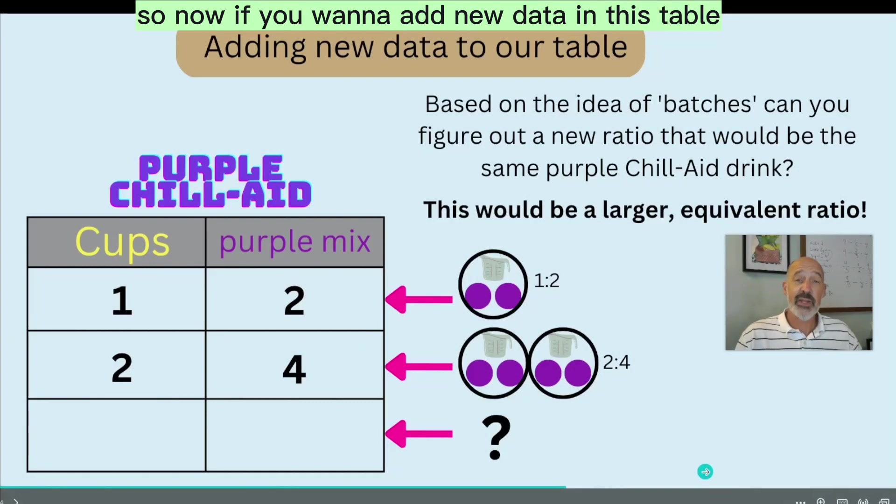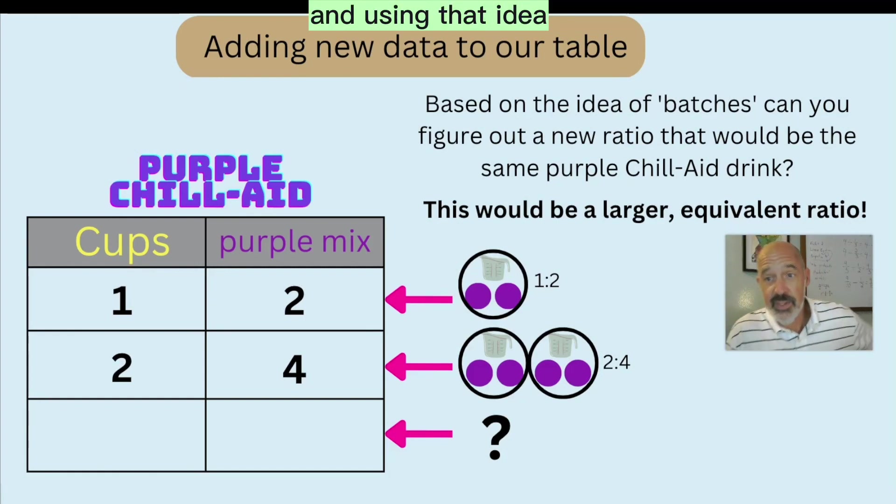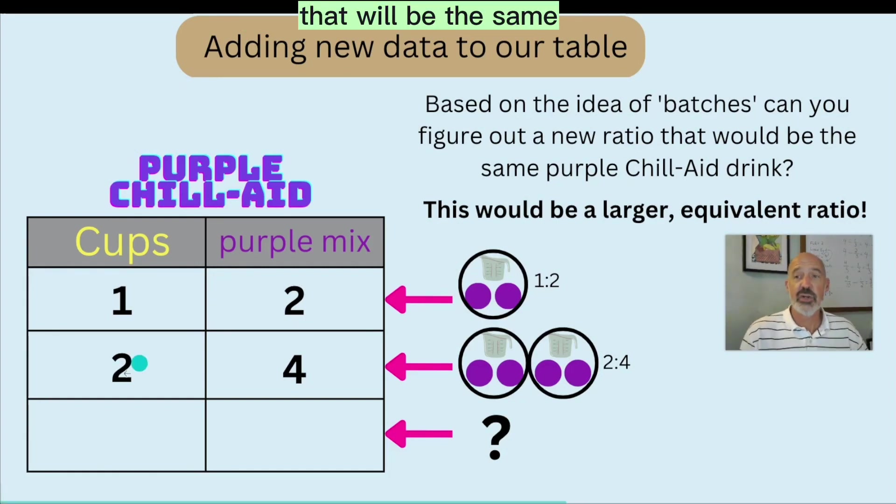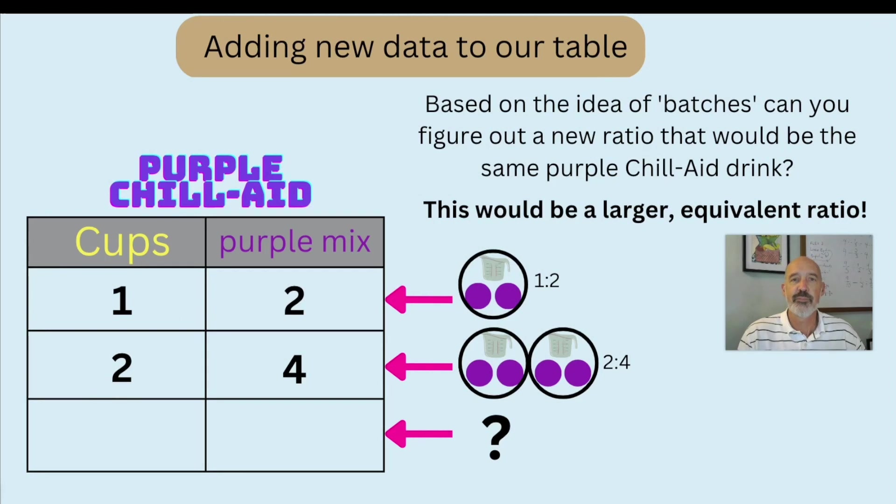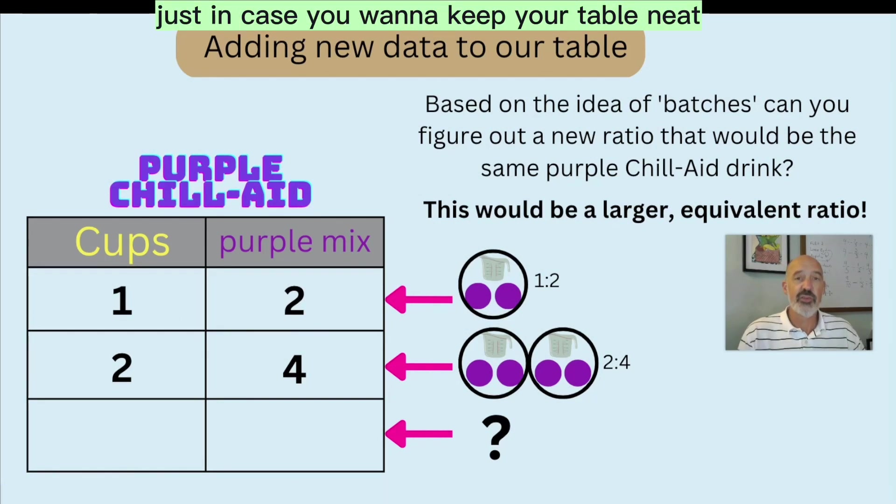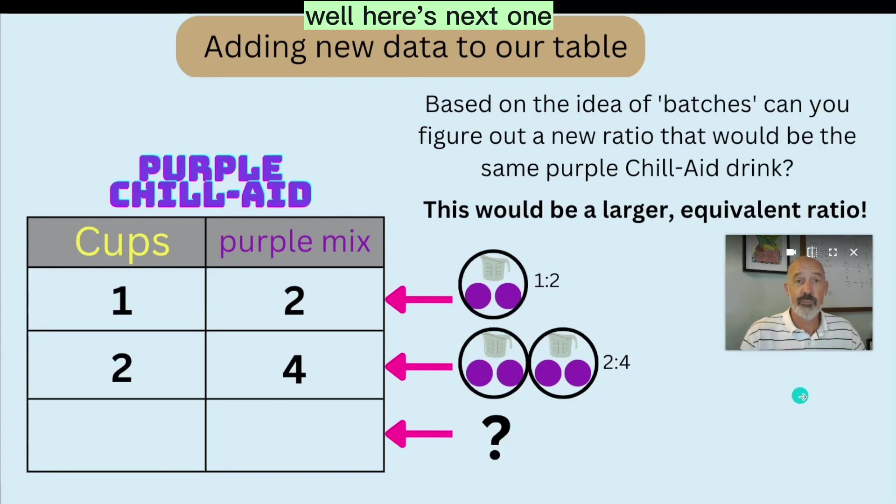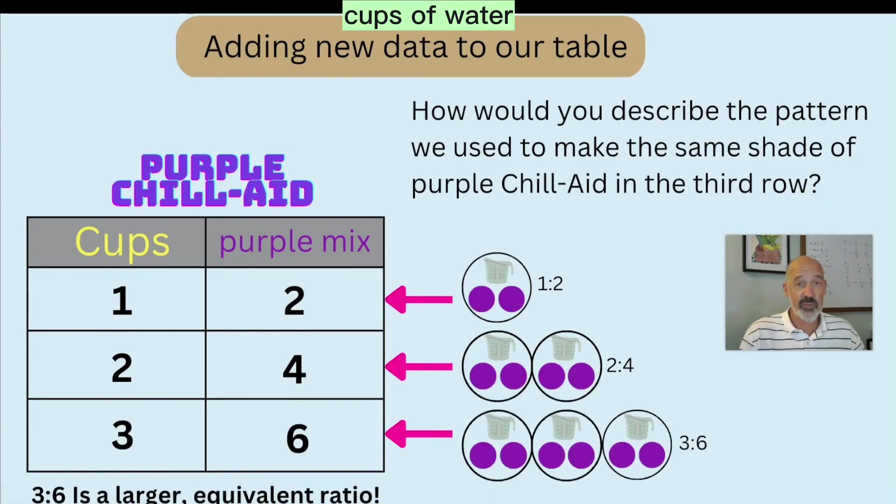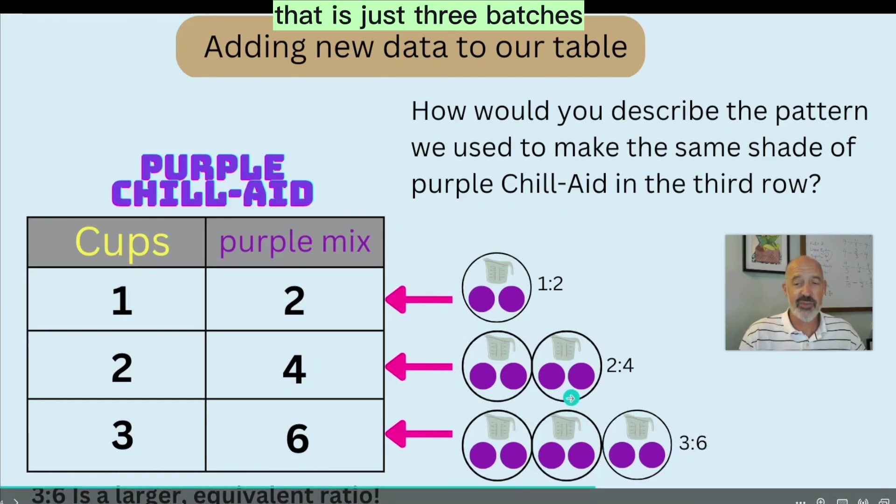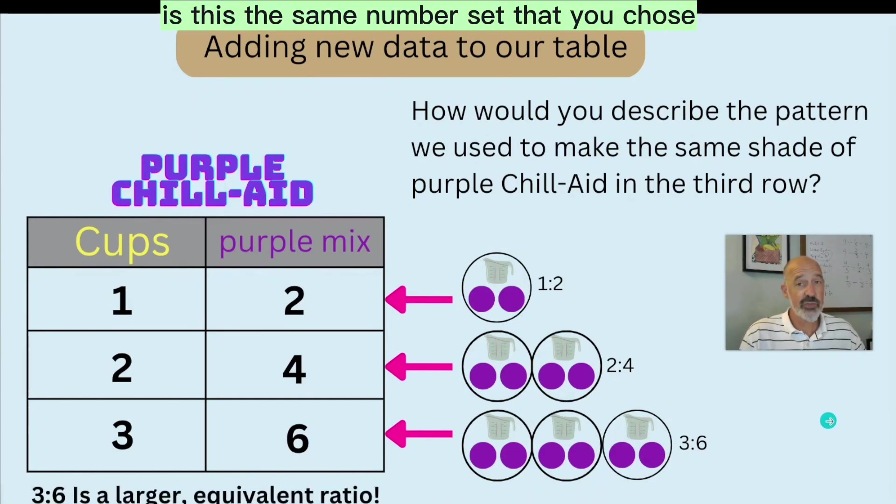So now if you want to add new data in this table, it should be based on the idea of batches. And using that idea, can you figure out a new ratio that will be the same purple Chil-Aid drink flavor, the same color? Go ahead and put it in your table or just say it out loud, just in case you want to keep your table neat. And then just keep it in your mind for a moment. Well, here's the next one that I think is equivalent. And it's three cups of water to six spoonfuls of mix. And you can see that now that is just three batches of the original purple Chil-Aid. Is this the same number set that you chose? Maybe.